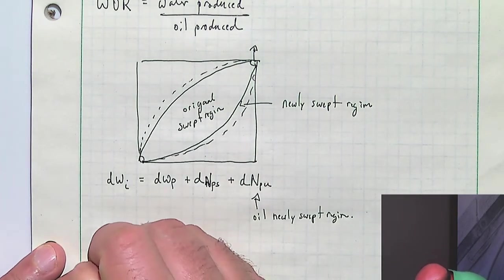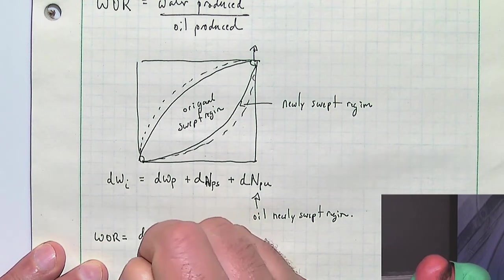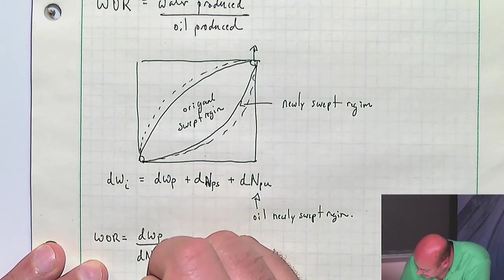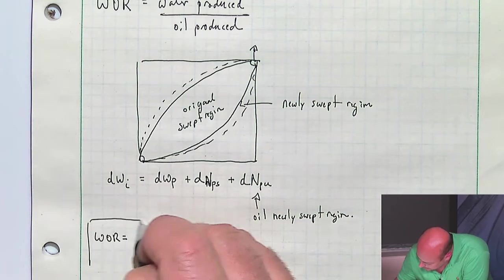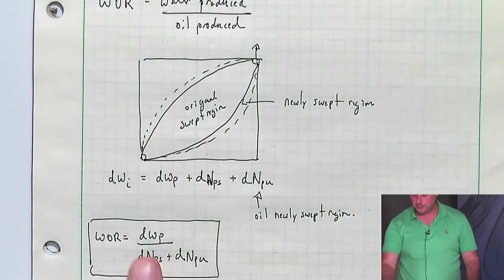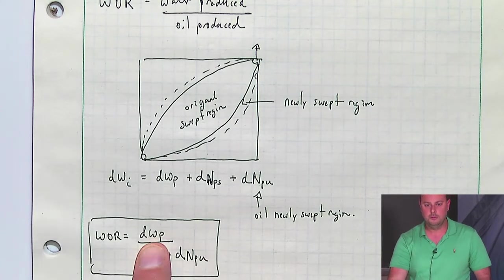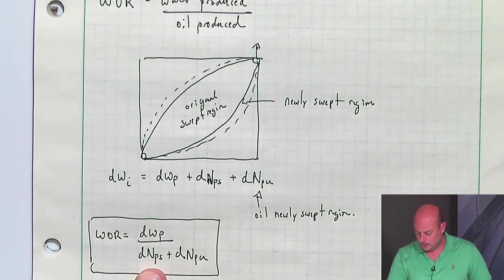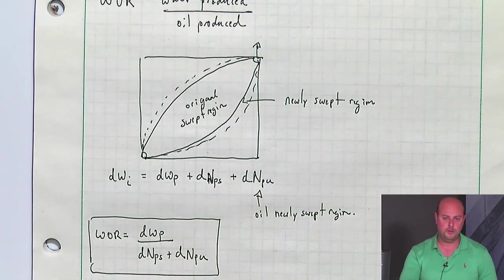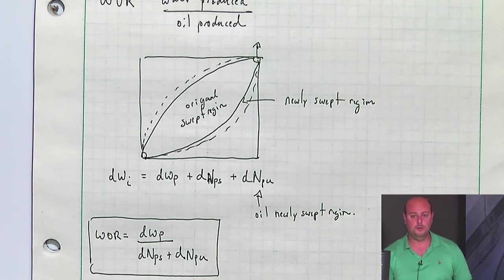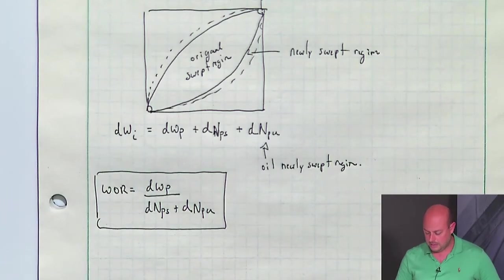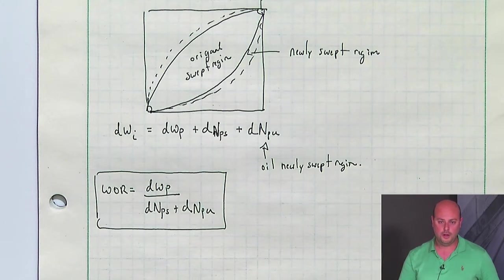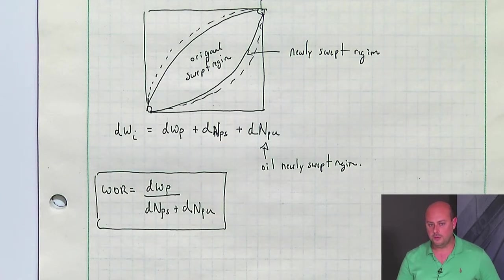Therefore, I'm going to define WOR as DWP divided by DNPS plus DNPU. Water-oil ratio is the ratio of water produced — DWP is the incremental water produced — divided by the oil produced. There are two kinds of oil produced: oil in the originally swept region, and oil in the newly swept region. This isn't a particularly useful formula — it doesn't help us predict anything — so we're going to do quite a bit of math and algebra to come up with a formula that's useful for calculating the water-oil ratio.